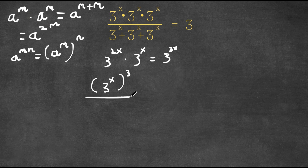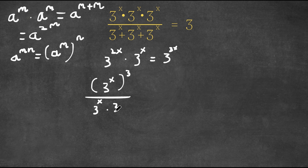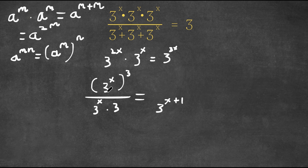So now we have 3 to the power of x to the power of 3 over — 3 to the power of x plus 3 to the power of x plus 3 to the power of x is simply 3 to the power of x times 3. And 3 to the power of x times 3 equals 3 to the power of x plus 1, because when multiplying exponents we add them, and 3 is the same as 3 to the power of 1.